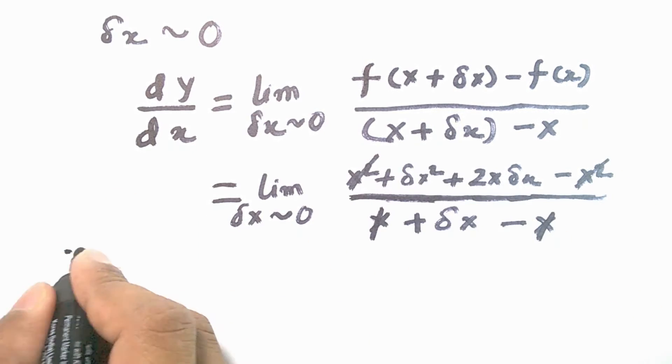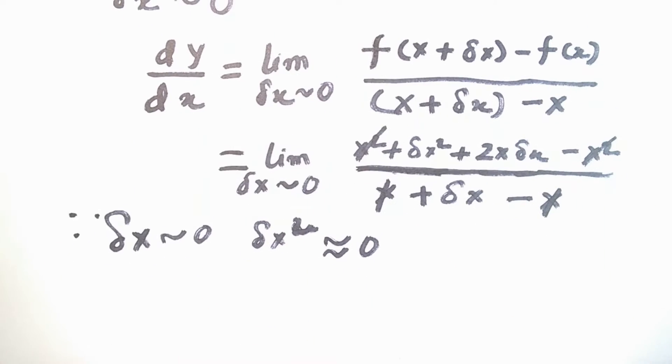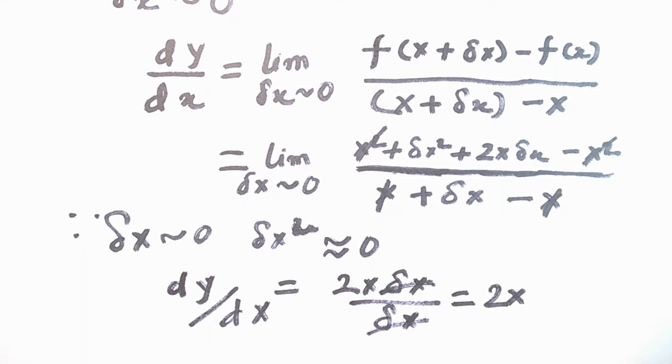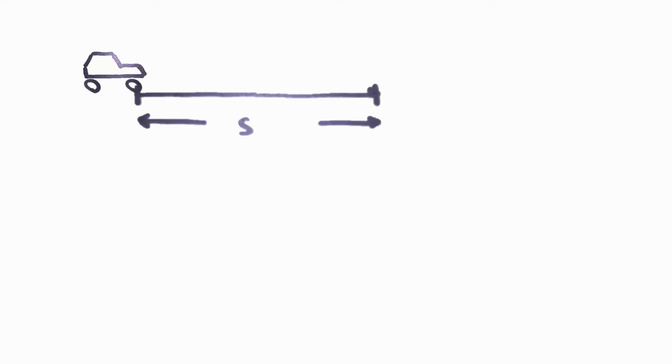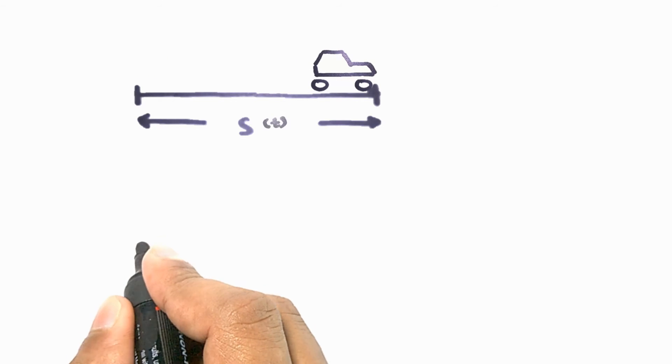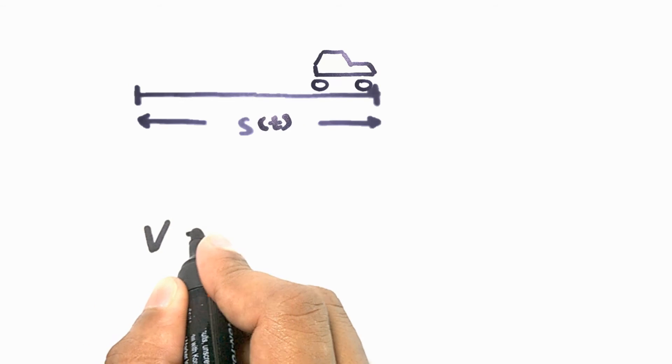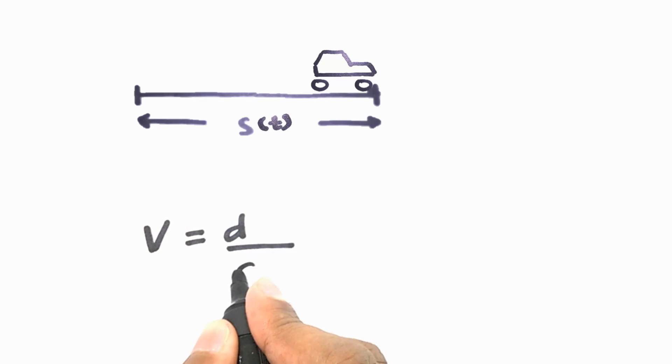By this we can easily understand that speed is the rate of change of displacement with the change in time. So, if displacement is a function of time, then the derivative of this function with time is going to be the velocity.